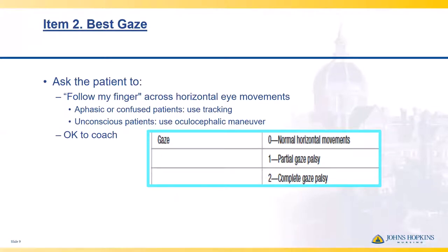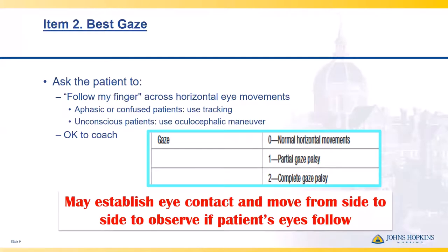The second item is best gaze. You're going to ask the patient to follow your finger as you move it horizontally across their face. They should be tracking with their eyes to the point that their pupils are burying the entire way — when looking all the way to the right, no white of the eyes should be visible past the pupil, and the same when moving to the left. For an unconscious patient, you can use the oculocephalic maneuver. It is okay to coach the patient, and you may need to physically move yourself from side to side to get them to track you.